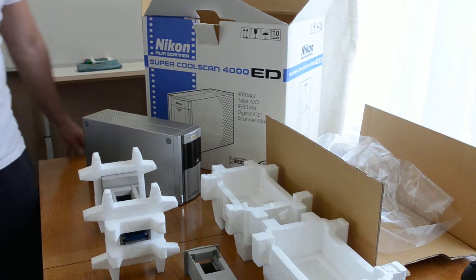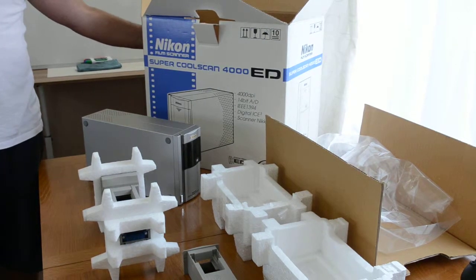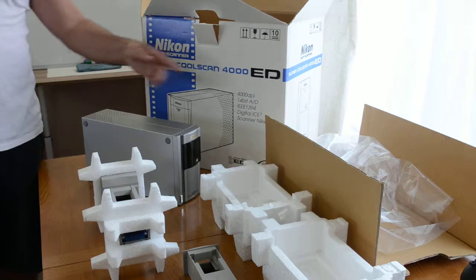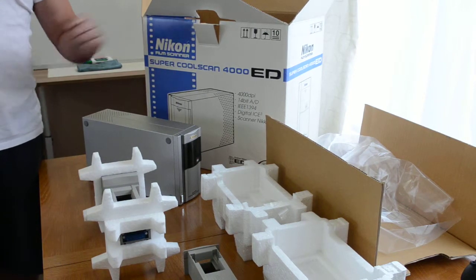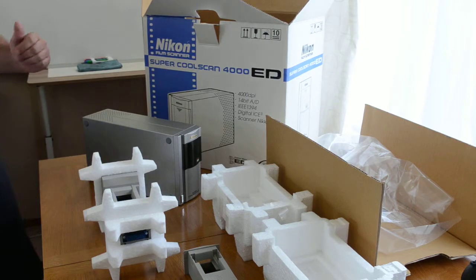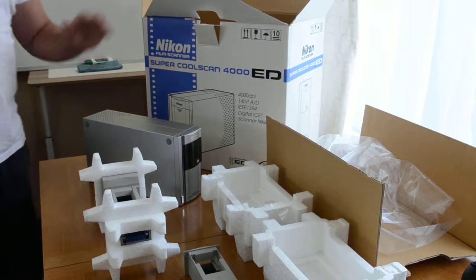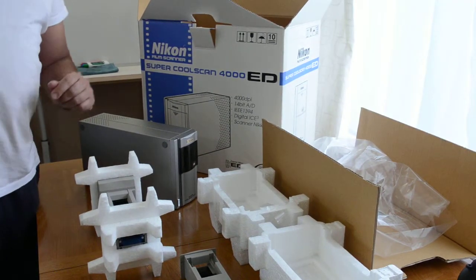Alright folks, I'm back again and today we're going to be viewing this Nikon film scanner, the Super Coolscan 4000 ED with 4,000 DPI and 14-bit AD conversion. This item was sent to me from a very prestigious company in London. It has already been validated and confirmed as working condition, perfect working condition.